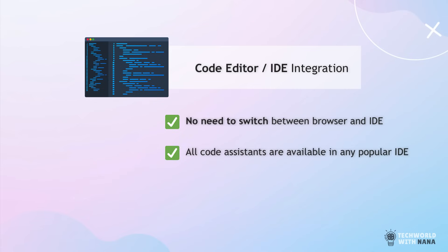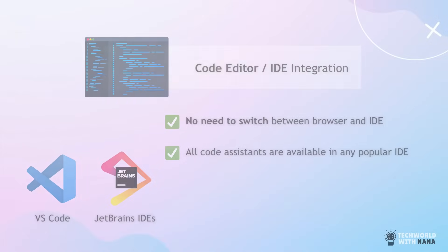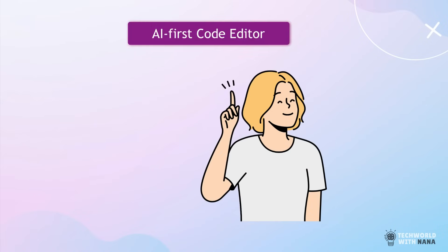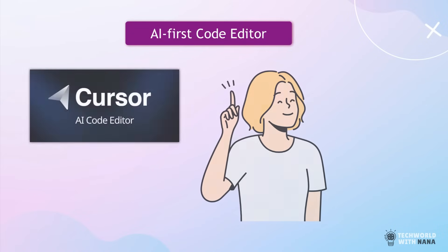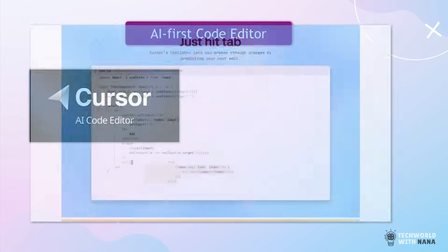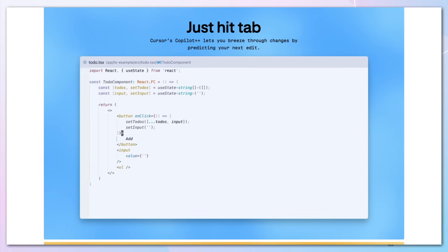Code assistants are most useful when you can use them directly in your code editor while actually writing the code, so you don't have to switch between your code editor and internet browser. All these tools can be integrated in any popular editor or IDE like Visual Studio Code or IntelliJ. There is even an AI-powered code editor like Cursor, where the editor itself has AI integration built in, giving you a lot of additional AI code assistance features as part of the editor itself.